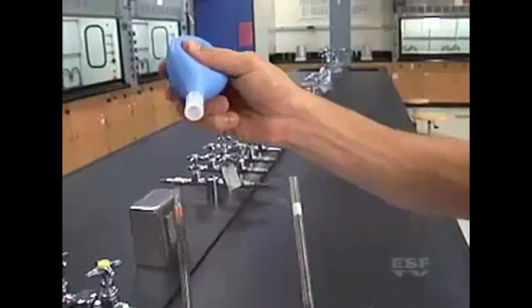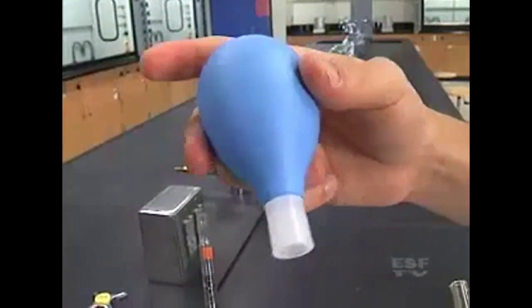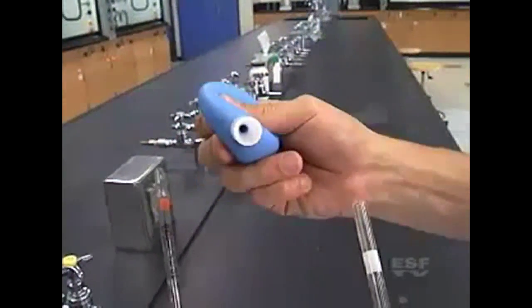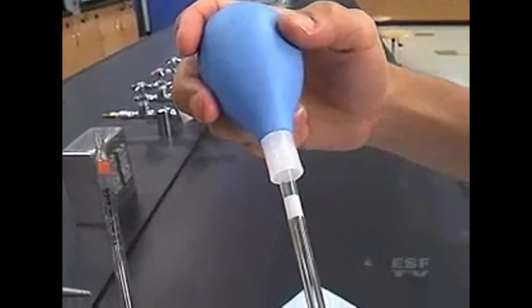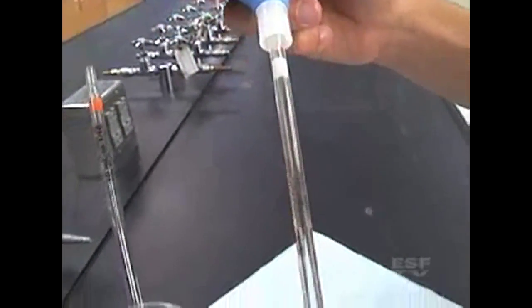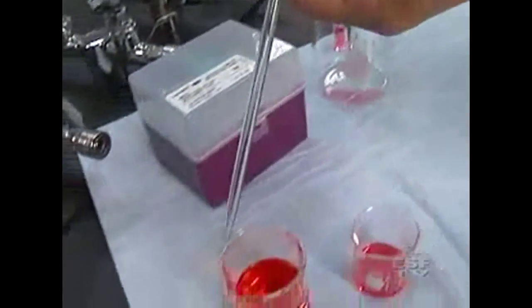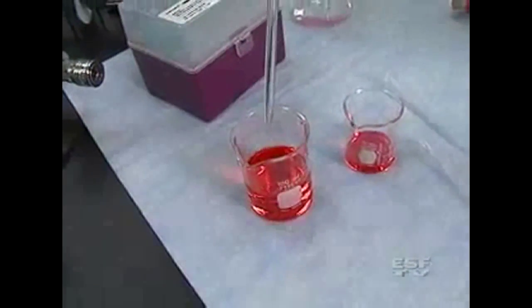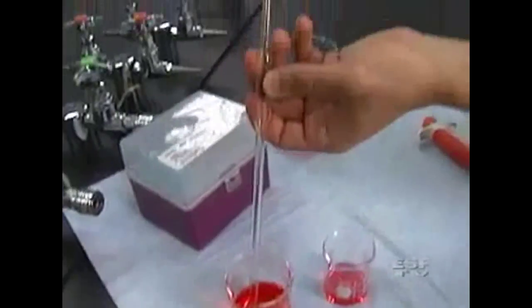So pipette bulb looks much like a turkey baster bulb and just has a hole in the top to put the pipette in. So I'm just going to rest that on the top and then go over to my solution and I'm going to press down on my pipette bulb and then withdraw a solution.